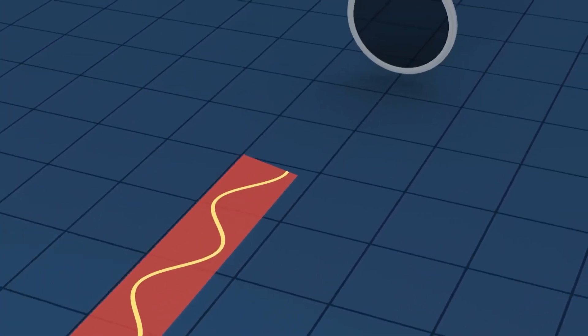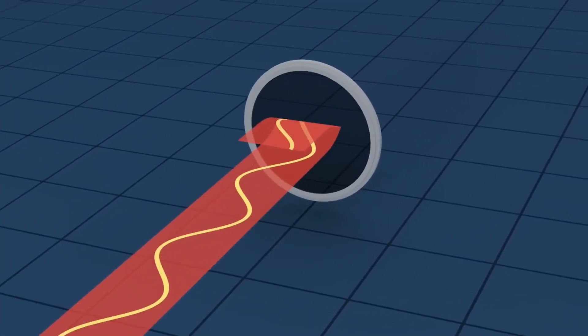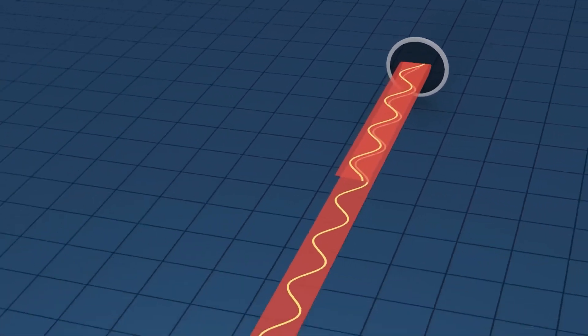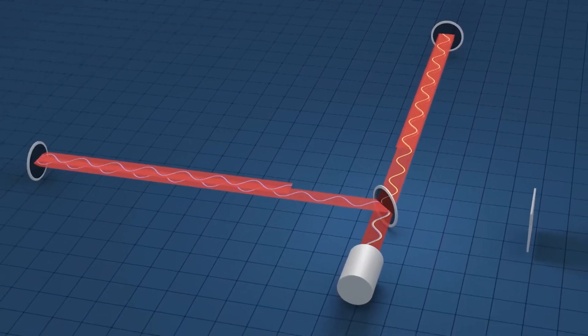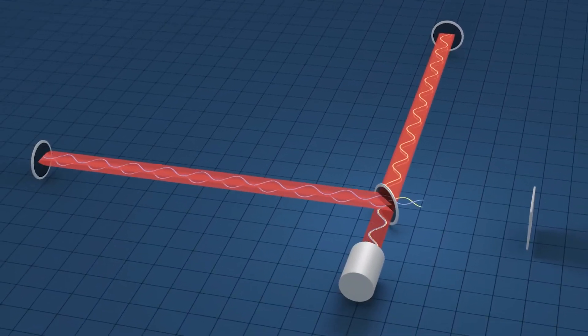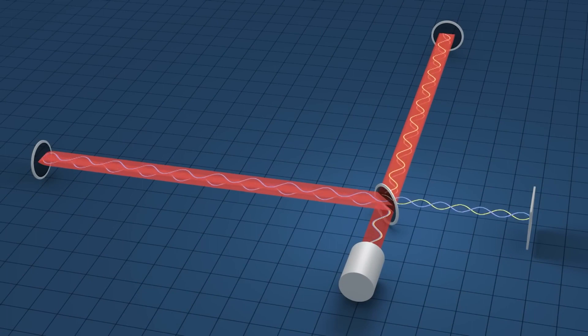But the excitement doesn't stop there. Scientists are constantly pushing the boundaries of gravitational wave astronomy. Ground-based observatories like LIGO and Virgo are being upgraded to enhance their sensitivity, increasing the chances of more incredible discoveries.